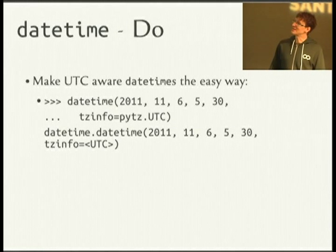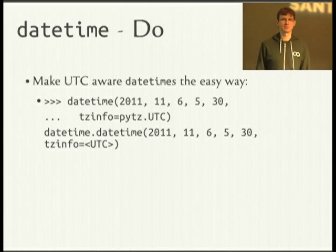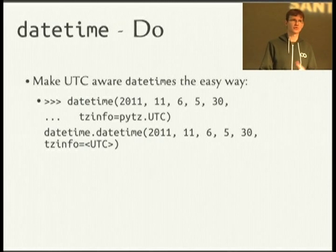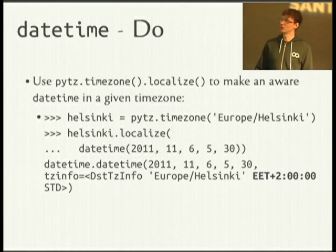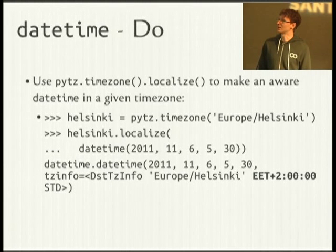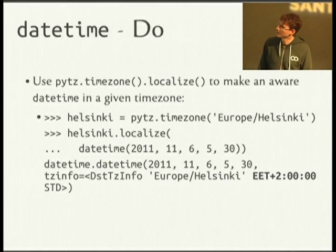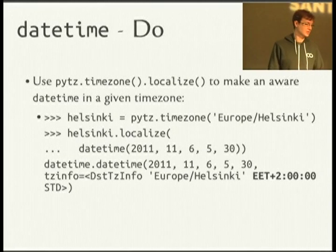Do make UTC-aware datetimes the easy way: create a datetime object and pass in tzinfo as UTC. It's easy and straightforward — now you have an aware datetime and can translate it into a different time zone. If you need to make a local time, and you have the wall time and know what time zone it's supposed to be in, you should use the PyTZ timezone's localize() method. This will give you the right answer — for example, in Helsinki on November 6th at 5:30 in the morning, their time zone was EET, UTC+2.